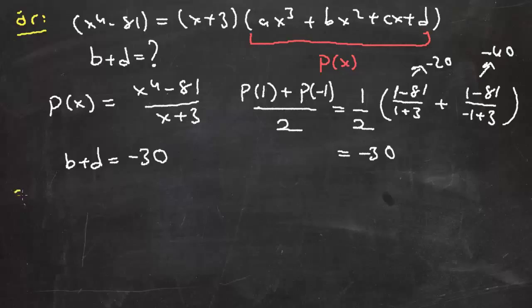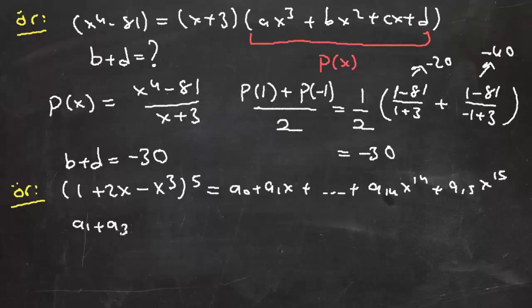Şimdi bir örnek daha çözelim. Elimizde (1 + 2x - x³)⁵ polinom olsun. Şimdi bu polinomu açacak olursak, polinom daha önceki videolarımızda anlattığım üzere 15. dereceden bir polinom olacak. Yani a₀ + a₁x + ... + a₁₄x¹⁴ + a₁₅x¹⁵ gibi bir polinom olacak. Şimdi biz polinomda tek dereceli terimlerin toplamını istiyoruz. a₁ + a₃ + ... + a₁₃ + a₁₅ nedir diye soruyoruz.